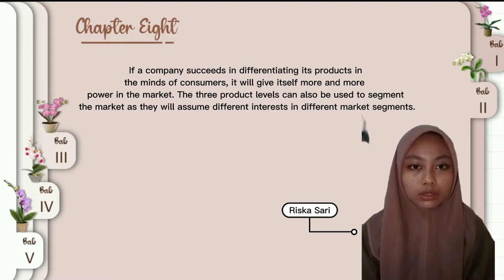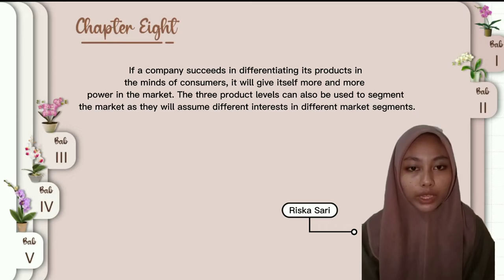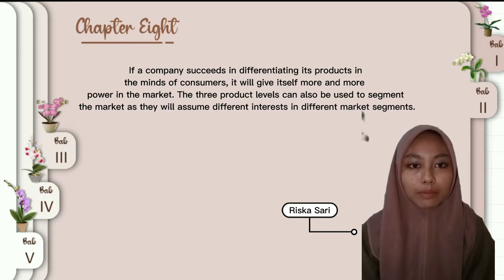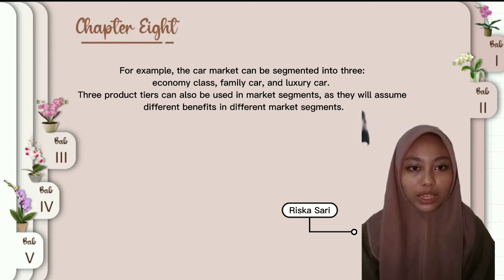If a company succeeds in differentiating each product in the mind of the consumer, it will give itself more and more power in the market. The different product levels can also be used to segment the market, as they will assume different interests in different market segments. For example, the car market can be segmented into economy class, family core, and legacy core.